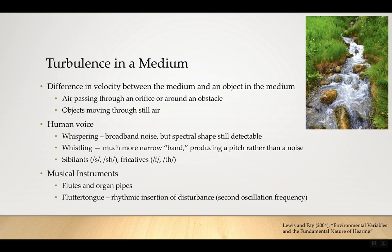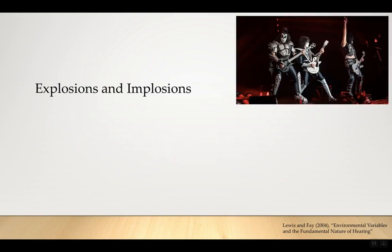Flutter tongue is another example of turbulence. If you're singing and then flutter your tongue, you're producing one oscillation pitch — the pitch of your voice — and then a second rhythmic disturbance, like a rhythmic turbulence into the medium. That gives you a second frequency. We'll see something like that in various different animal vocalizations.